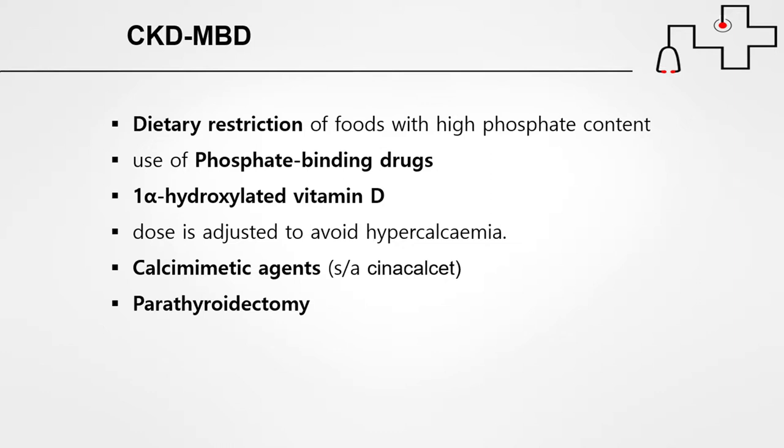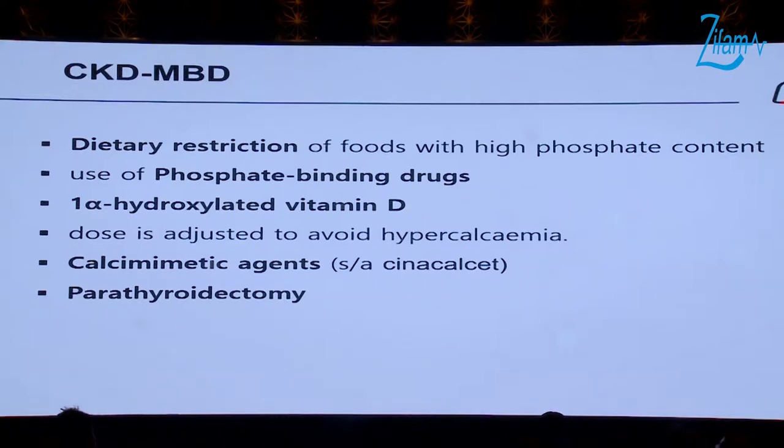We must correct the metabolic bone disease and keep calcium-phosphate parameters within recommended ranges in CKD-MBD. Interventions include restricting phosphate intake, and if phosphate remains persistently elevated, using phosphate-binding agents such as sevelamer or lanthanum or calcium-containing drugs. We can also give 1-alpha hydroxyvitamin D, with the dose adjusted to avoid hypercalcemia — it's important to check calcium levels regularly. Cinacalcet can be used as a calcimimetic agent when hyperparathyroidism cannot be controlled.